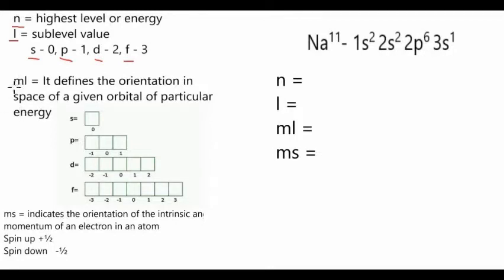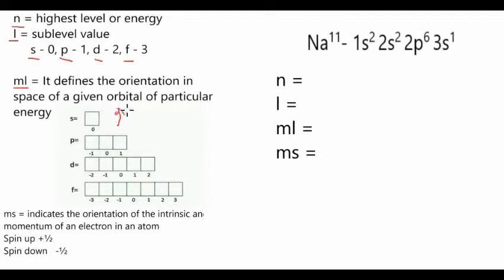The magnetic quantum number ml defines the orientation in space of a given orbital of particular energy. For every box in the orbital diagram, it contains or can carry two electrons, represented in the form of an arrow up or arrow down.